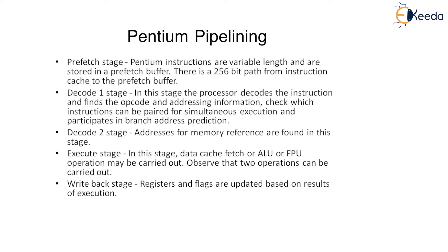First of all, let us have a quick recap on what is pipelining. Pipelining is eventually used to speed up the processes — that is, in order to increase the throughput, we are going to use the pipeline. Pipelining is simply segmentizing the instruction queue or data queue.